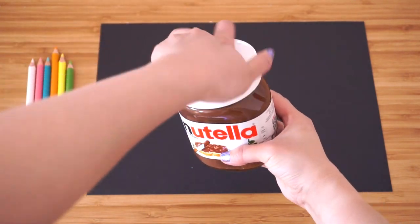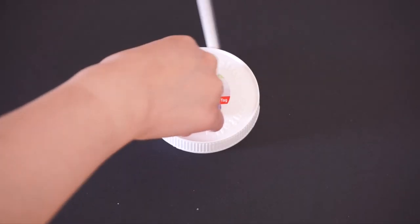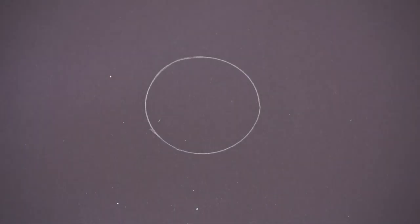First find a round object to use as your template and then trace around it to get a circle. The larger this is the easier it will be to color it in later on, so if you're a beginner then start with something bigger.